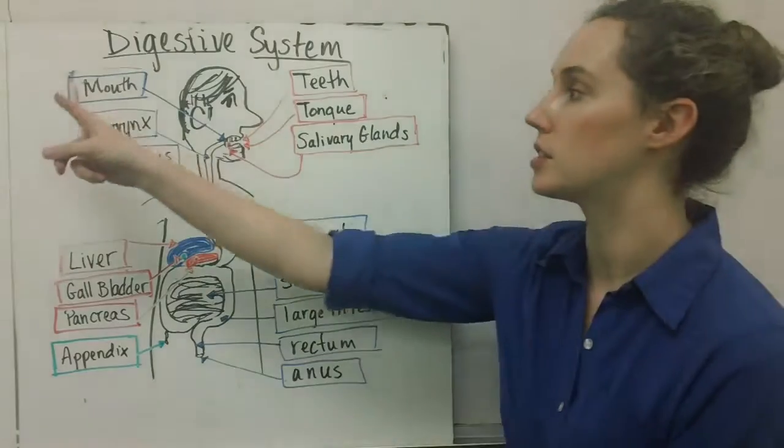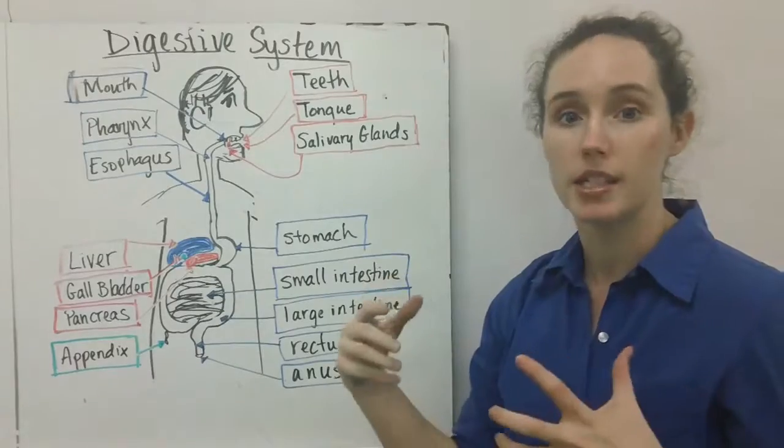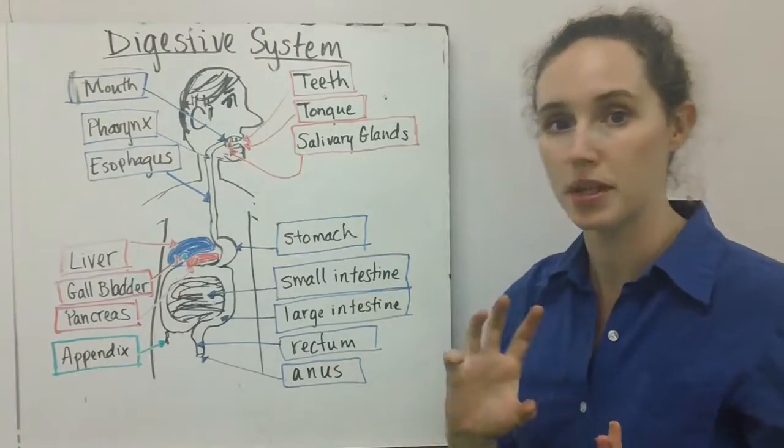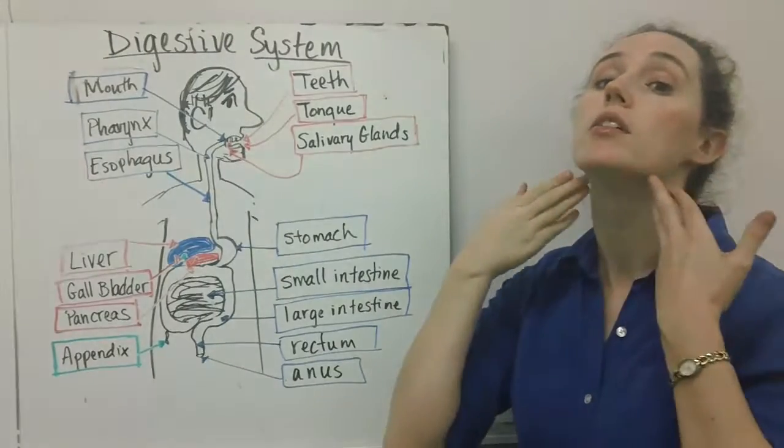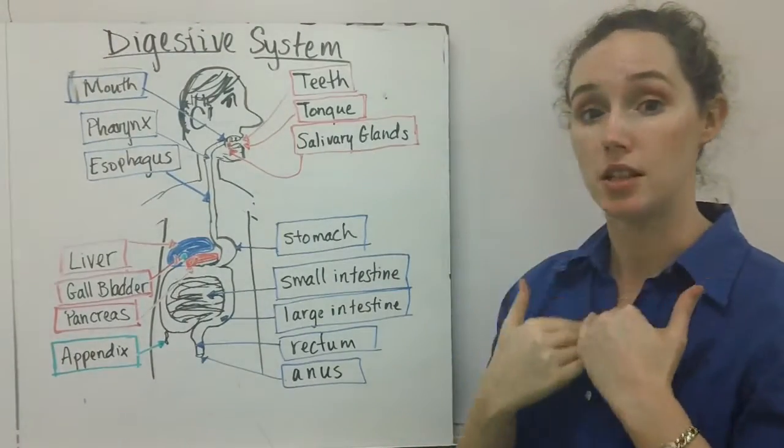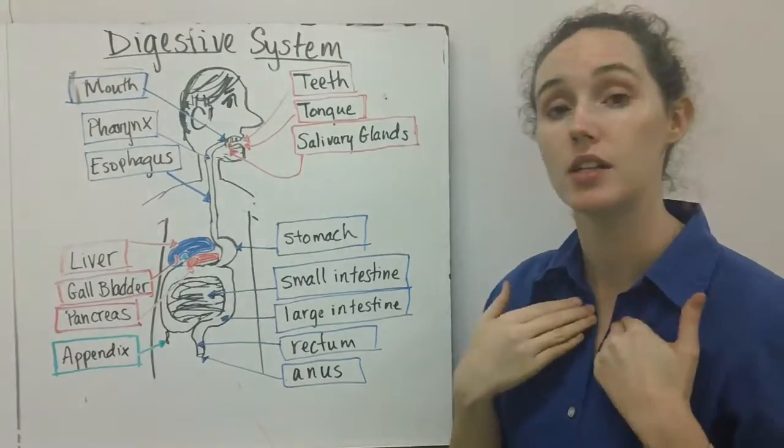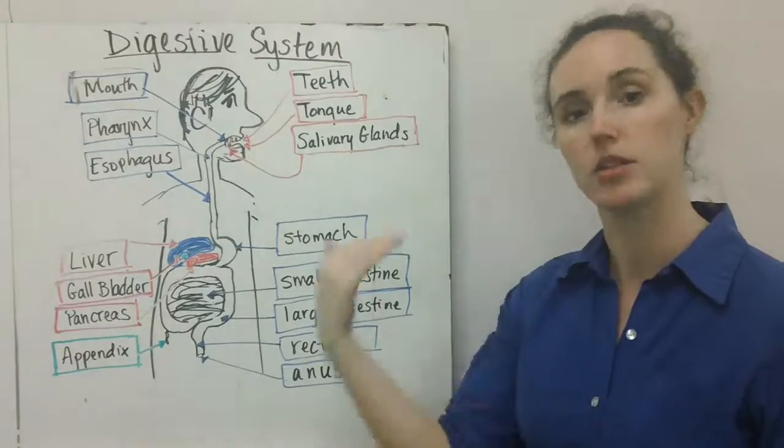The digestive system begins in the mouth where the teeth, tongue, and salivary glands break down your food physically and chemically. Once it's broken down there, it's going to go down the pharynx, which is like your throat, which leads to the esophagus. The esophagus is a muscular tube that carries your food from your mouth to your stomach.